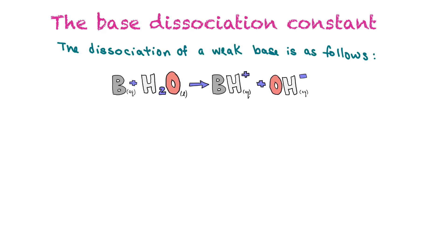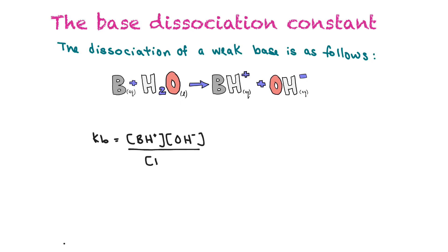Now we're going to practice calculating the base dissociation constant. The dissociation of a weak base is shown here. Again, we leave water out of the equation, so Kb equals the concentration of BH+ times the concentration of hydroxide, all over the concentration of the base. Kb is constant at a given temperature and tells us the base strength — a high Kb value means the base is stronger and will dissociate more.